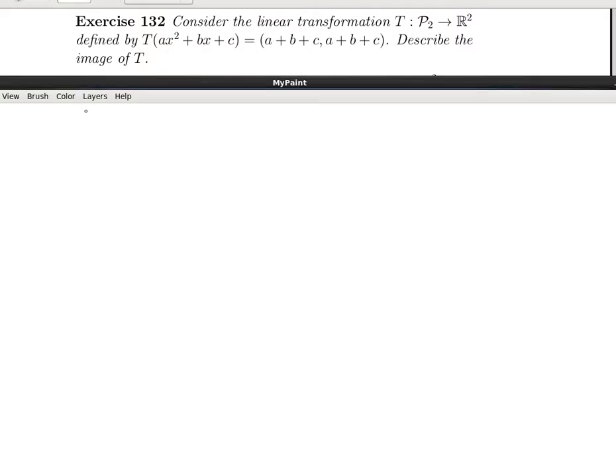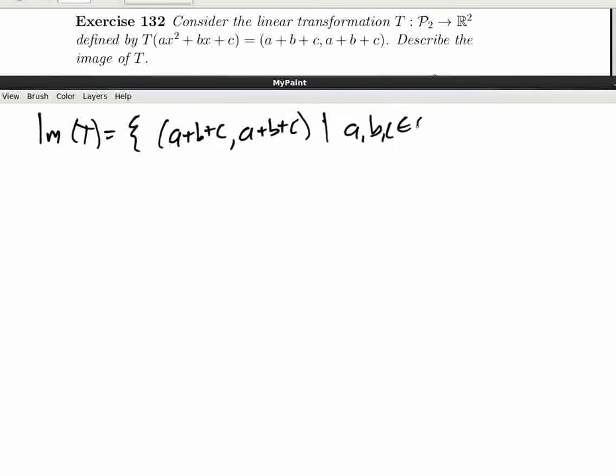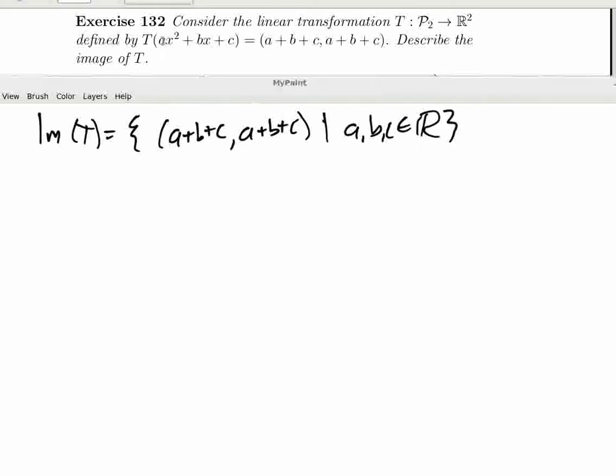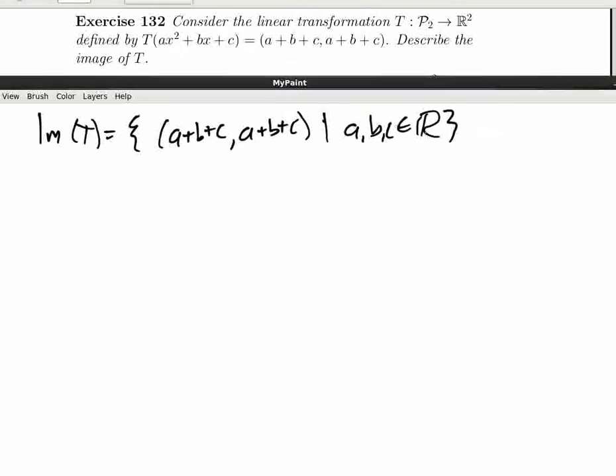I'm going to describe the image. That is, the image of T, we can say pretty clearly, a plus b plus c, a plus b plus c, such that a, b, and c belong to the real numbers. Since a, b, and c have to be coefficients of a quadratic, and the coefficients are all real numbers, so we have this.